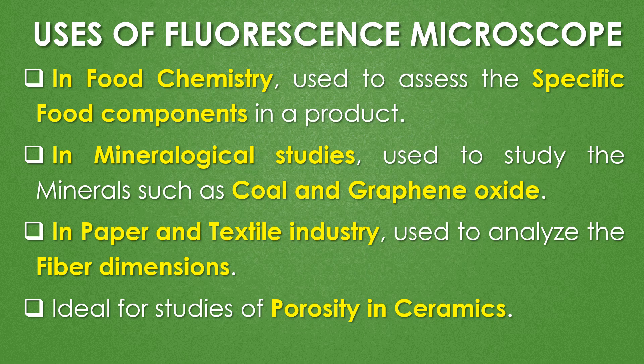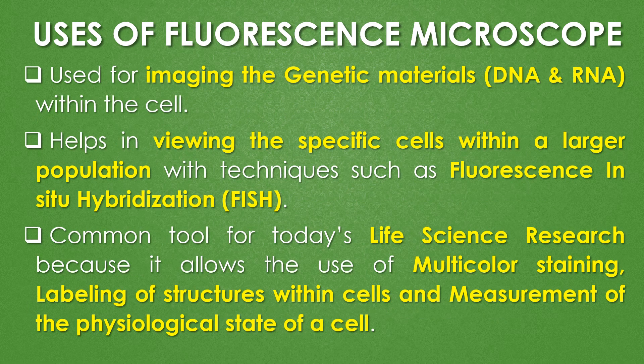In paper and textile industries, the fluorescence microscope is used to analyze fiber dimensions. It is also ideal for studies of porosity in ceramics. It is used for imaging genetic materials like DNA and RNA within the cell, and helps in viewing specific cells within a large population using techniques such as FISH (fluorescent in-situ hybridization). The fluorescence microscope is a common tool for life science research because it allows the use of multicolor staining, labeling of structures within cells, and measurement of the physiological state of a cell.